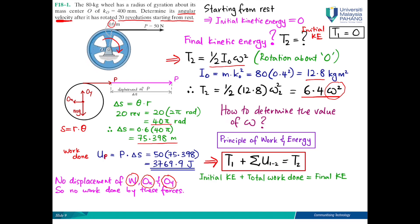When you have all this, the initial kinetic energy is here, T1 equals zero. The total work done is here, U_P, and the final kinetic energy is here. When we put all this together, you have zero for the initial kinetic energy plus 3769 for total work done equal to 6.4 omega_2 squared for the final kinetic energy.